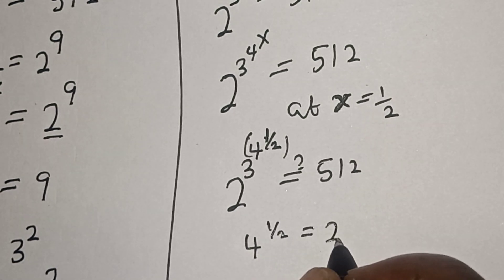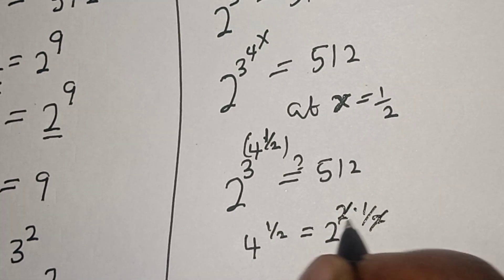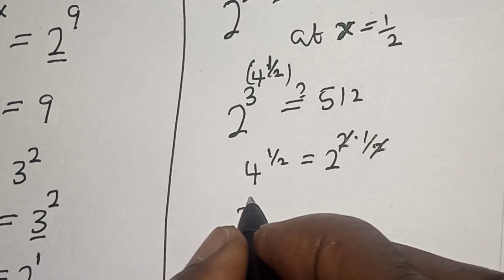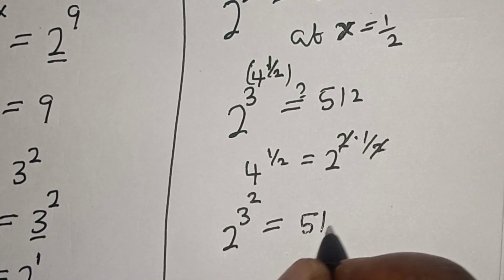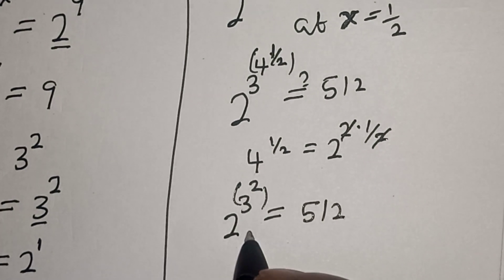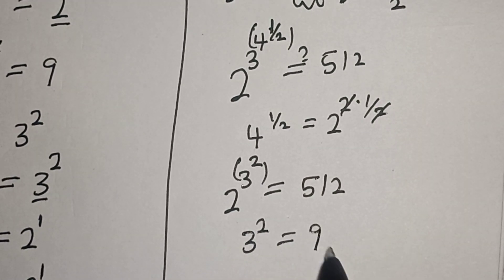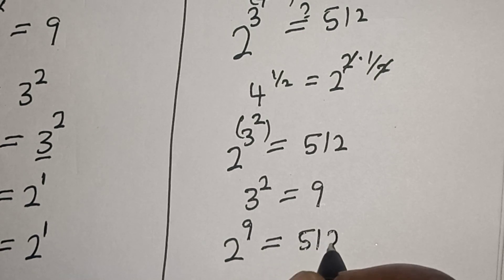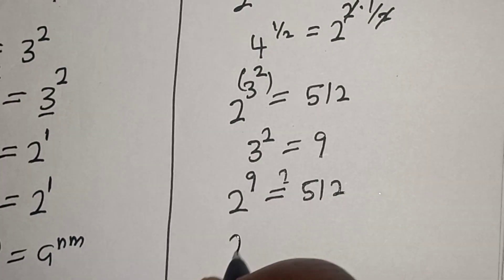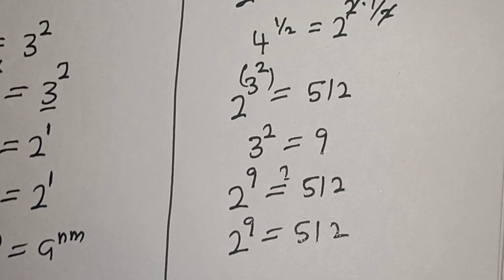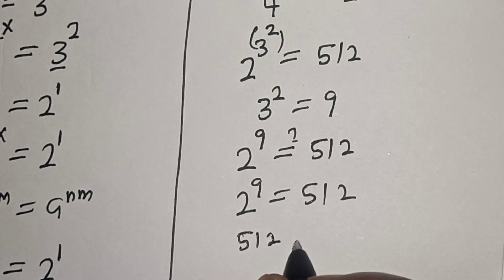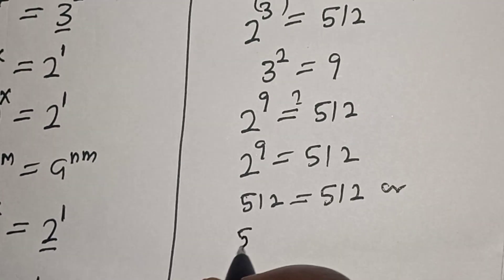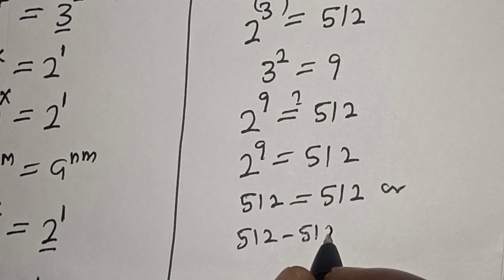We have 4 raised to the power of 1 over 2, which equals 2 squared multiplied by 1 over 2 — the 2s cancel, giving us 2. Then 2 to the power of 3 to the power of 2 must equal 512. Working with this: 3 squared equals 9, so we have 2 to the power of 9, which must equal 512. And indeed 2 raised to the power of 9 equals 512, meaning the left-hand side 512 equals the right-hand side 512.